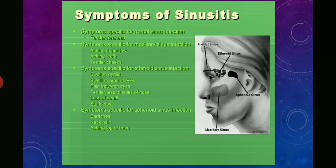Symptoms of sinusitis include tender forehead. Symptoms specific to maxillary sinus infection include aching in upper jaw, teeth, and tender cheeks. Symptoms specific to ethmoidal sinus infection include swollen eyelids, swelling around the eyes, pain between eyes, tenderness of the side of the nose, loss of smell, and stuffy nose. Symptoms specific to sphenoidal sinus infection include neck pain, earaches, and ache on top of the head. As shown in the diagram, the sinuses illustrated are frontal, ethmoidal, sphenoidal, and maxillary.